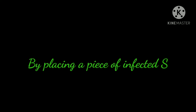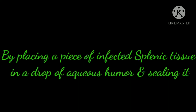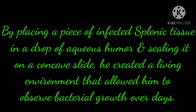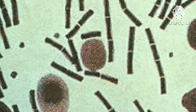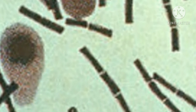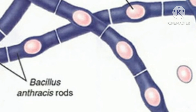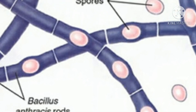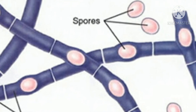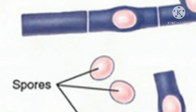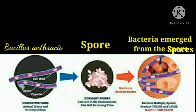By placing a piece of infected splenic tissue in a drop of aqueous humor and sealing it on a concave slide, he created a living environment that allowed him to observe bacterial growth over days. He discovered that under optimal conditions the bacteria would form long filaments. The filaments acquired granules which developed into refractile spores. The filaments then decomposed, but the spores remained. When the fluid was dried and then reconstituted with aqueous humor, bacteria emerged from the spores.